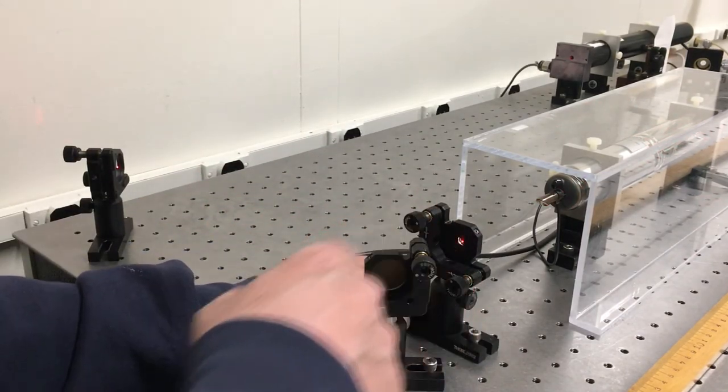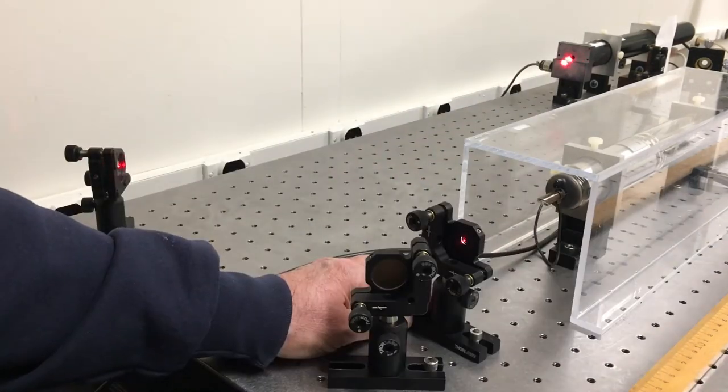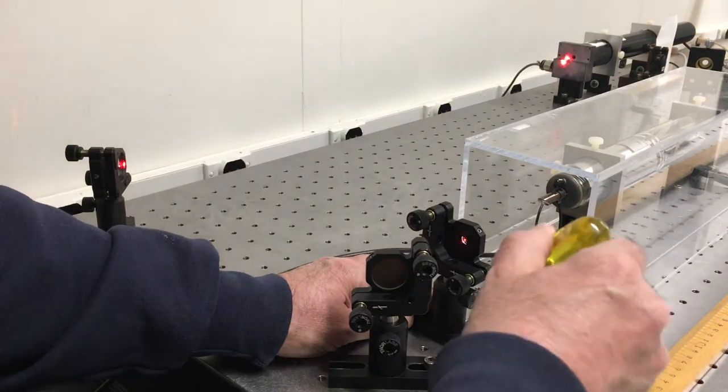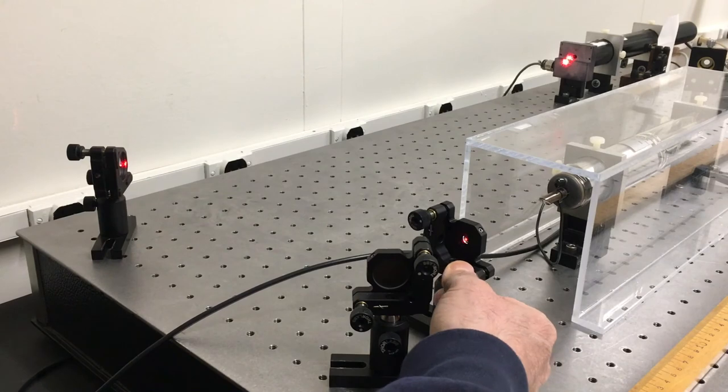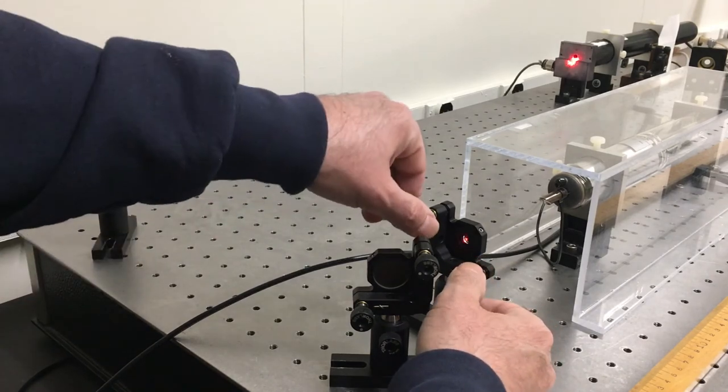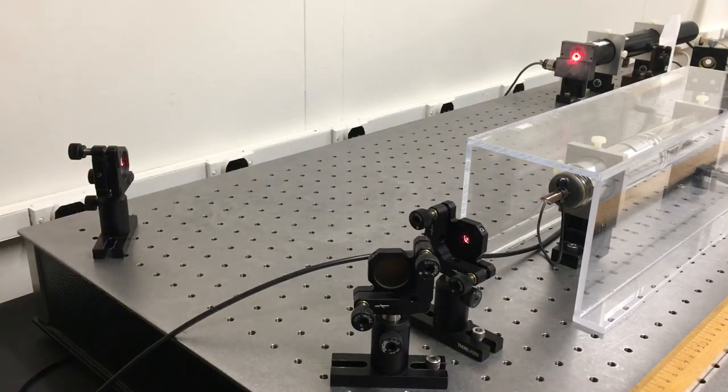By bouncing our laser off the back of the mirror, we can pick up the reflection on the shutter in front of the laser over there. I can tighten that up and zero it in, so my beam is going back into the laser.